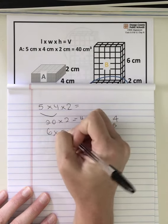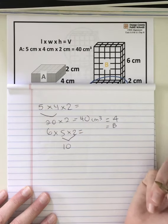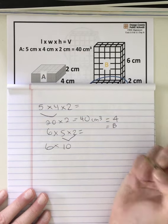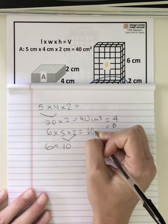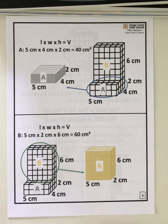When we're figuring that out, we have 6 times 5 times 2. I'm going to do 5 times 2 to get 10 first, because that's an easier number for me to multiply, and 6 times 10 is 60 cubic centimeters.